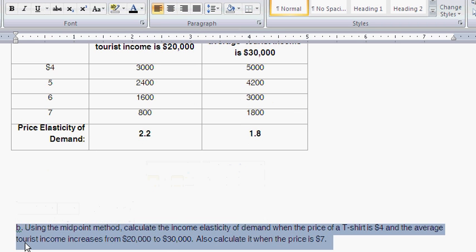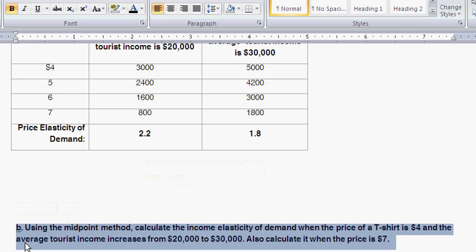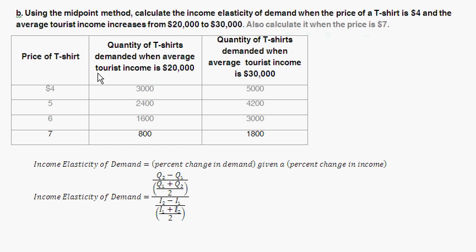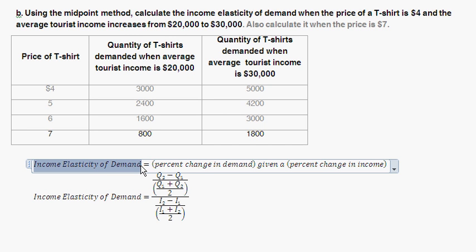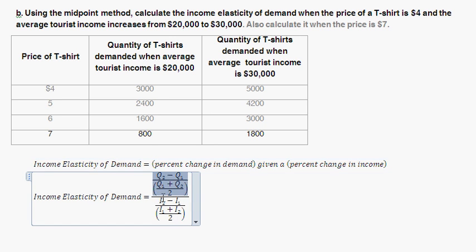Moving on to Part B: using the midpoint method, calculate the income elasticity of demand when the price of a t-shirt is $4 and the average tourist income increases from $20,000 to $30,000. We're dealing with the $4 price for t-shirts and comparing from a $20,000 person to a $30,000 person. The income elasticity of demand is how much demand changes given a change in income, and we use the midpoint method — the percent change in demand given a percent change in income.